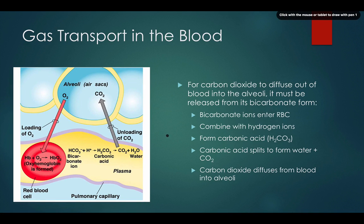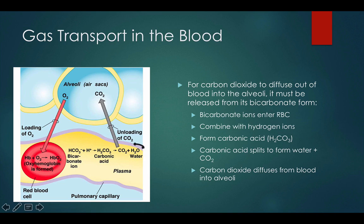Carbon dioxide molecules diffuse out of the blood into the alveoli, but must first be released from its bicarbonate form by adding water. Plasma is mostly water, so as bicarbonate reaches the alveoli it interacts with water through a chemical reaction: bicarbonate plus carbonic acid forms water and carbon dioxide. The carbonic acid then splits, yielding water and carbon dioxide that can exit through the alveoli.